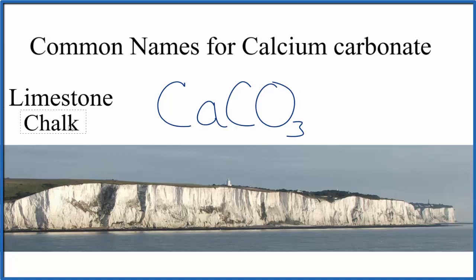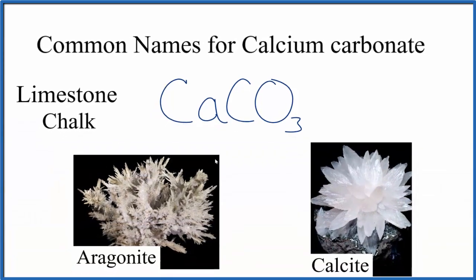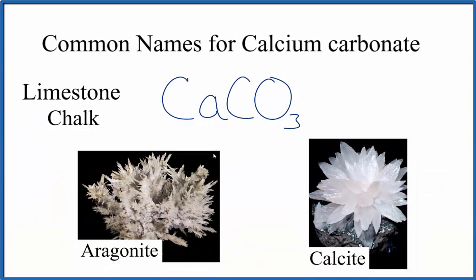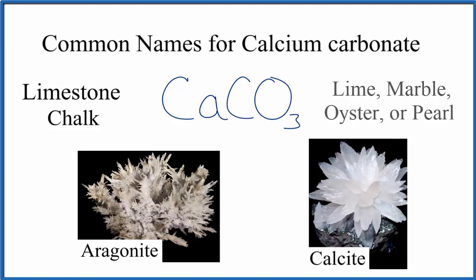You'll also hear it called chalk. Kind of like limestone, we also have the minerals calcite and aragonite, which are interesting-looking mineral formations — these are also common names for CaCO3. Occasionally you'll also hear it called lime, marble, pearl, or oyster, because these are common sources for calcium carbonate.